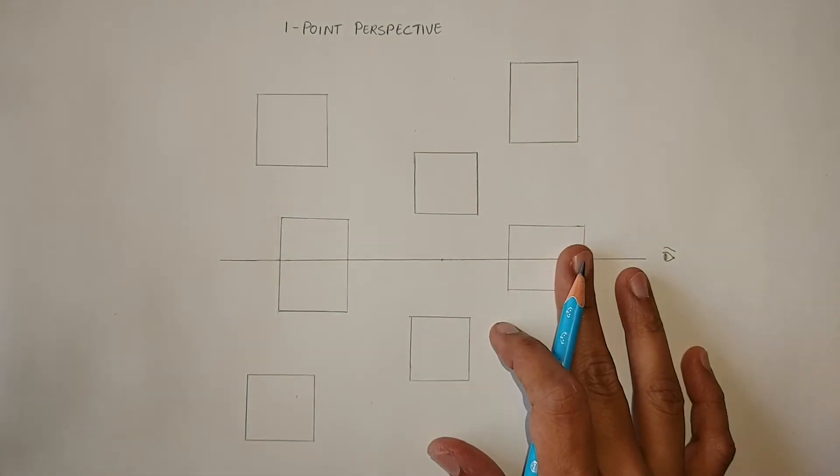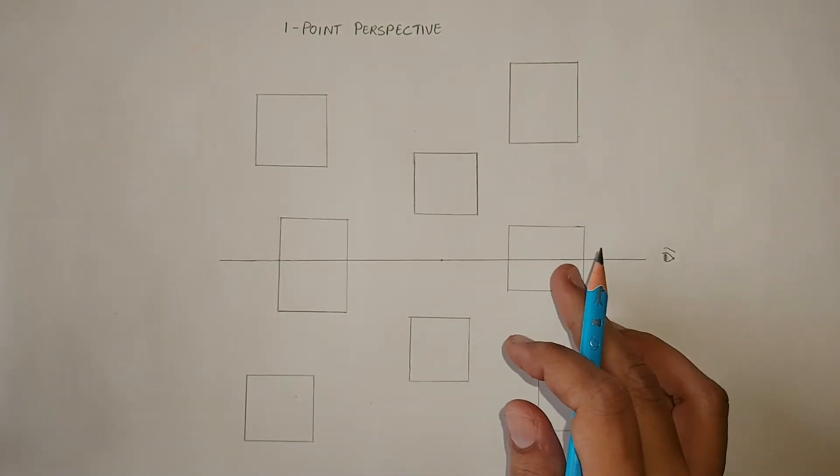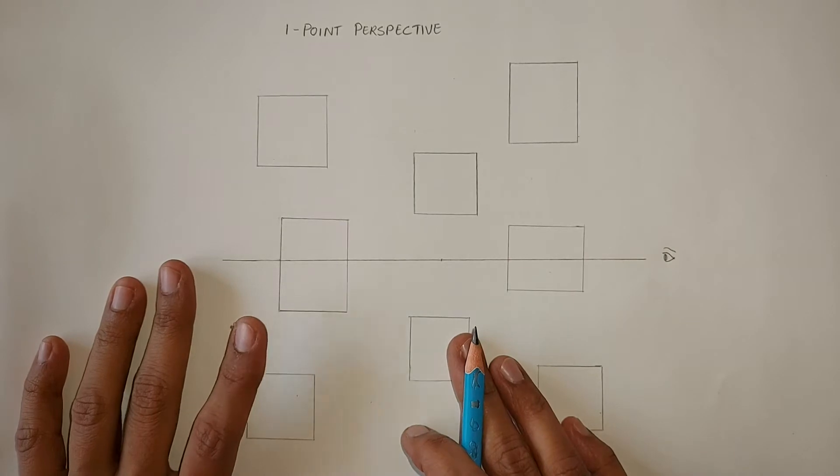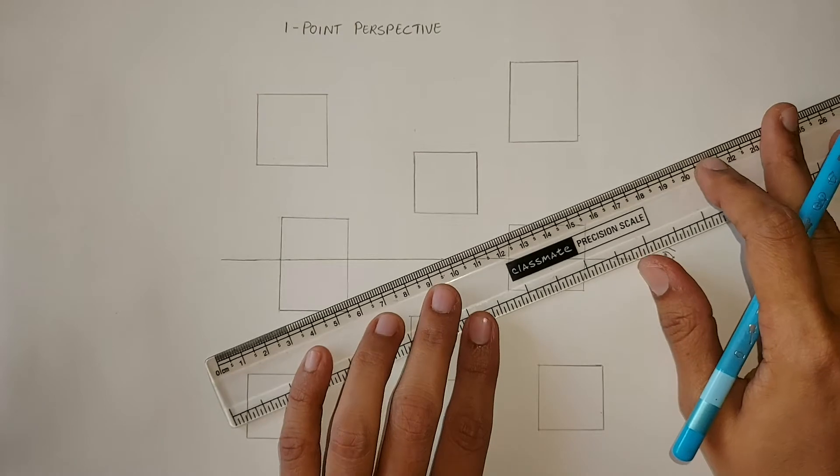Drawing cubes are the simplest way to explain one point perspective. We will connect the corners of these squares to the vanishing point to show them as cubes.